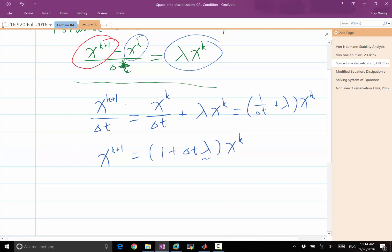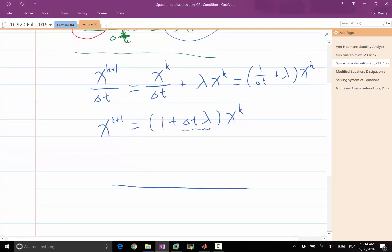And remember here, lambda can be complex. So for what values of lambda delta t would this equation be stable? If I draw a complex plane for delta t lambda, so this is the real part, this is the imaginary part, delta t lambda. Which part of the complex domain is this iteration stable, meaning not going to infinity?